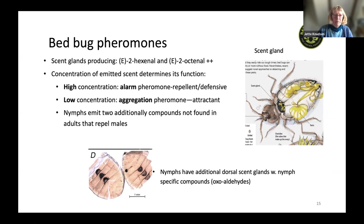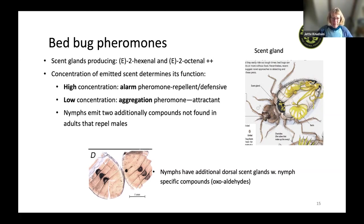This means we have a concentration-dependent pheromone: at high concentration it becomes alarming, and at low concentration it becomes attractive — which makes things more difficult with bed bugs. In addition, nymphs have scent glands on the dorsum of the abdomen and produce two compounds not found in adults, which serve to protect them from traumatic insemination by males.